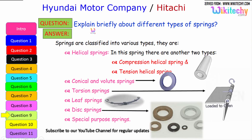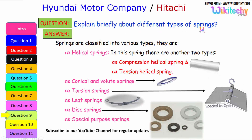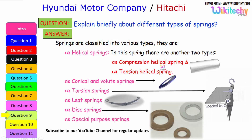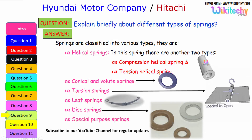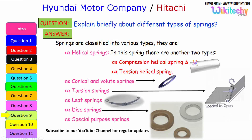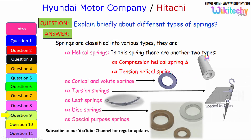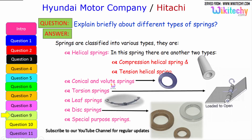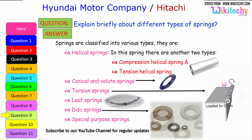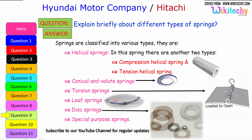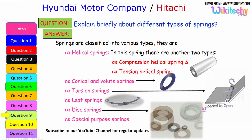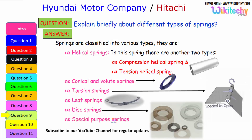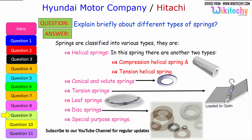Let us look briefly at the different types of springs. Springs are classified into various types: helical springs, which are further divided into compression helical springs and tension helical springs; conical springs; torsion springs; leaf springs; disk springs; and special purpose springs. These are the different types of springs available.